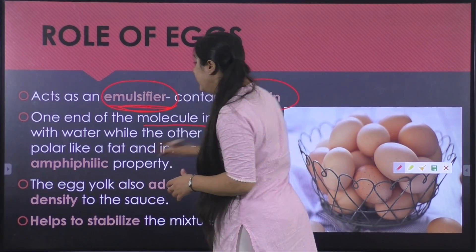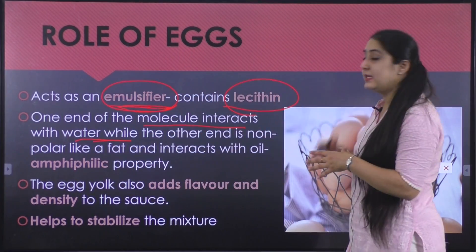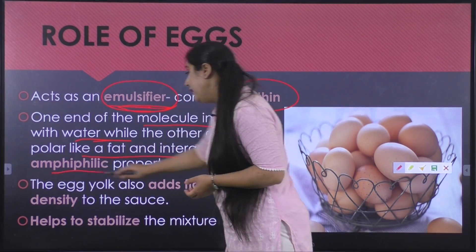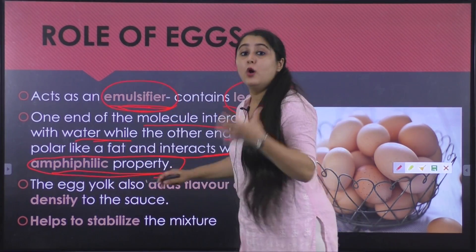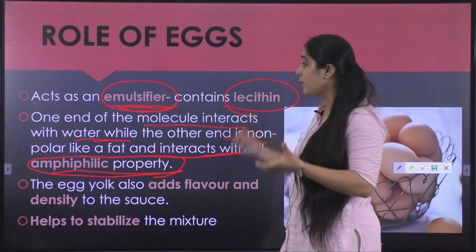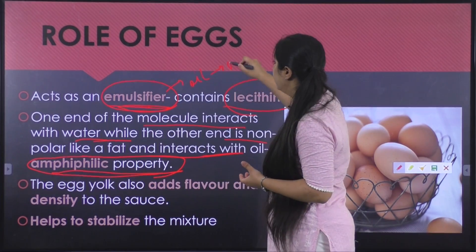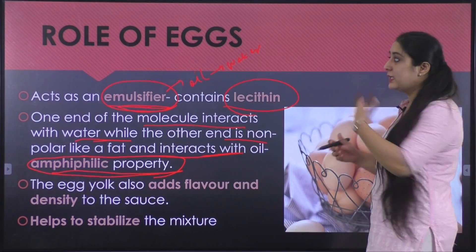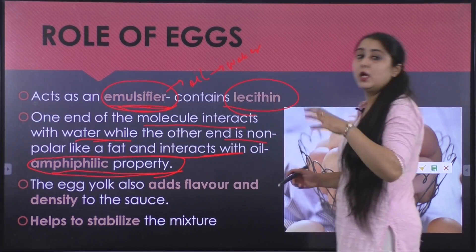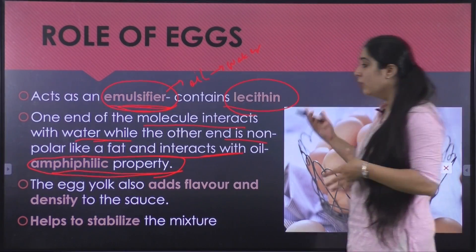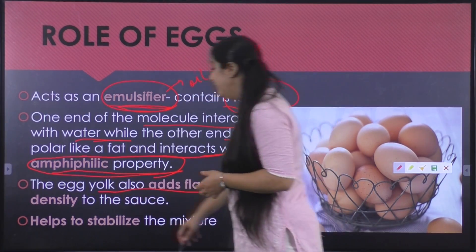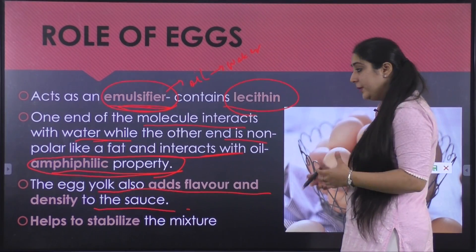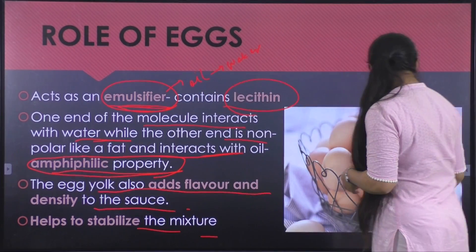One end of the emulsifier molecule interacts with the polar group such as water, and the other end is non-polar and binds with the fat, producing amphiphilic property. This property of binding one side with water and one side with oil is known as amphiphilic, and it allows the emulsifier to bind oil with water. The egg yolk also adds flavor and density to the sauce and helps to stabilize the mixture.